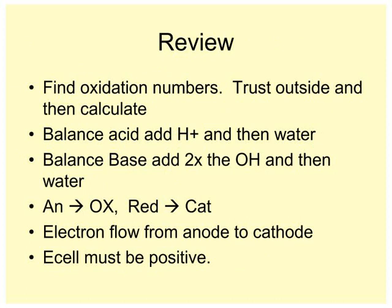To review, find the oxidation numbers, trust the outside, and then calculate. So we talked about how H is always plus 1, O is always negative 2, and then the outside is trustier than the inside. Balance the acid, add H positive, and then water. Balance the base, twice the hydroxide, and then water. An ox, red cat. Electron flows from anode to cathode. E cell must be positive, and even more important than all of that is that I like to move it. So move it nice and sweet and sassy, and have a good one. I'll see you tomorrow.